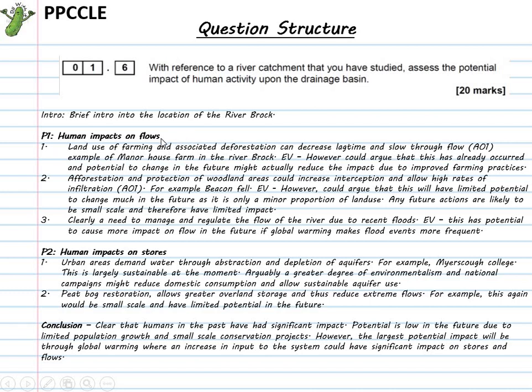In order to talk about how humans impact stores, I want to talk about the process of abstraction and how that might deplete aquifers. I've got my example of Myerscough College and how much water they abstract and thinking about how that might change into the future. Then my final point within stores: looking at peat bog restoration in the upper course of the river and how this might hold water back as overland stores and stores within peat bogs, which would ultimately reduce the flashiness of the river, reduce the extreme high discharges that might occur further downstream.